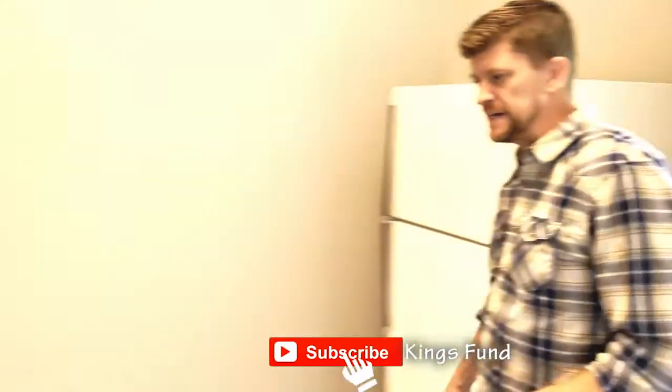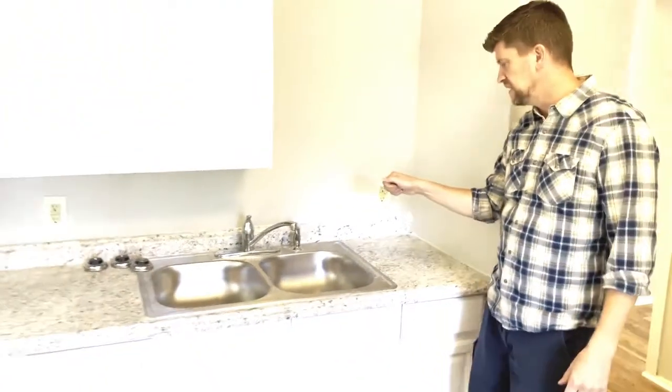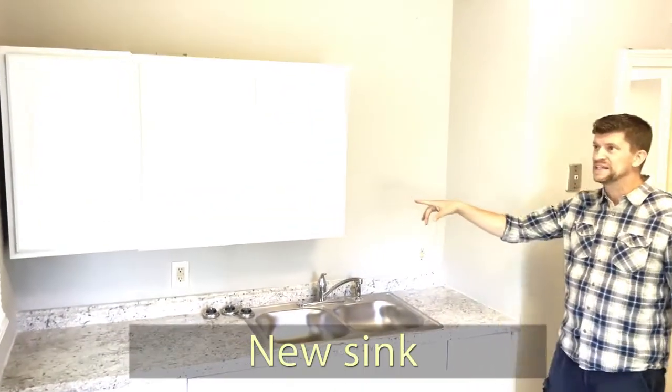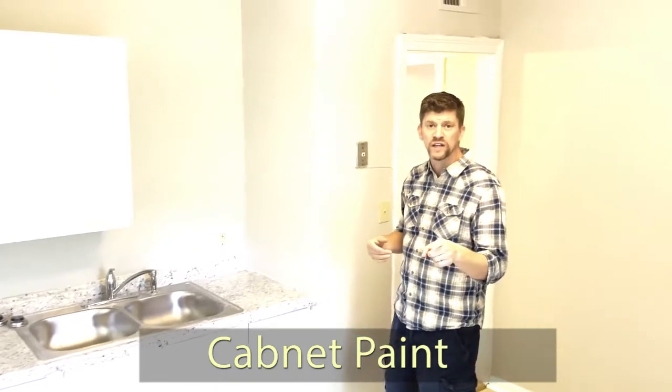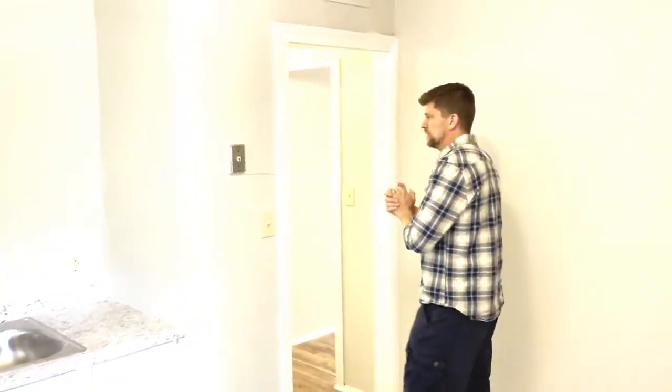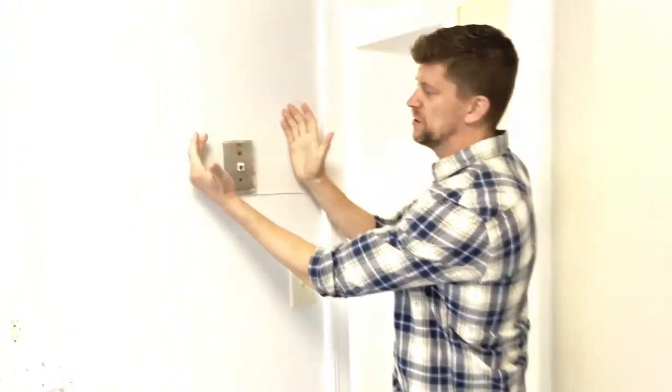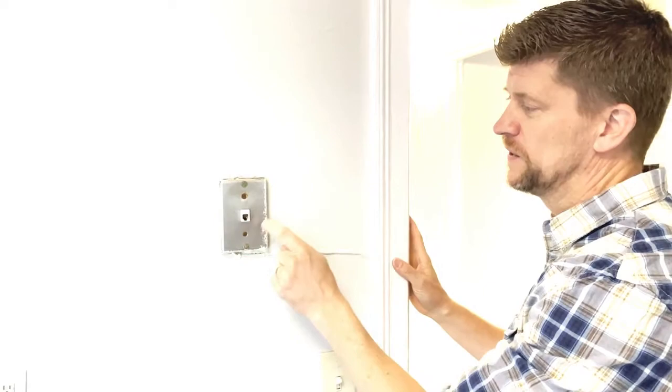What we did in this particular place is new sink, countertops, repainted the cabinets, rewiring on some of the washer and dryer areas. Now check this out, you know we're a large extra for that. So nice little—what is that, a home phone? That's a home phone. Kids don't even know what that is.